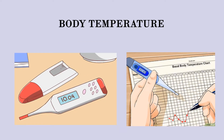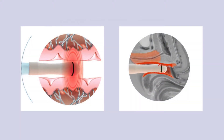A woman's temperature rises slightly during the days she ovulates. She will chart her basal body temperature every day for a few months on a graph, taking her temperature orally or vaginally with a special ultra-sensitive thermometer available at most drugstores.